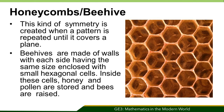There's also symmetry in honeycombs and beehives. Honeycombs or beehives are examples of wallpaper symmetry. This kind of symmetry is created when a pattern is repeated until it covers a plane. Beehives are made of walls with each side having the same size, enclosed with small hexagonal cells. Inside these cells, honey and pollen are stored and bees are raised.